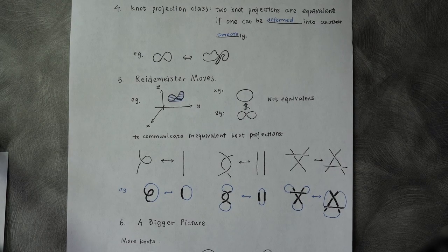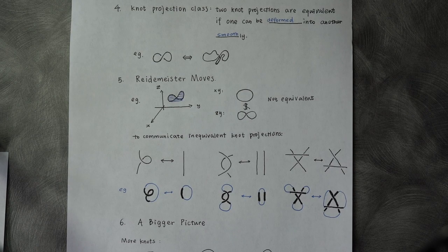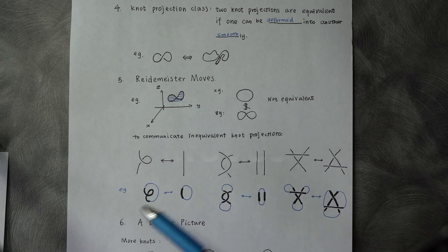So, in order to communicate inequivalent knot projections, we need to play with crossings.